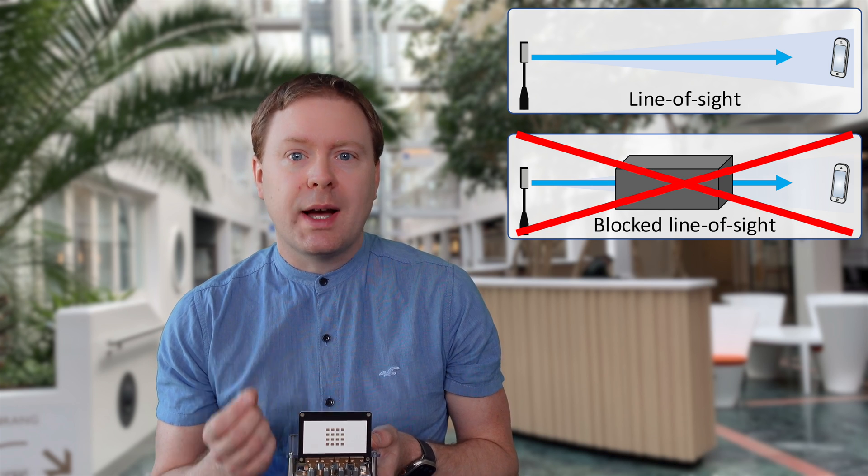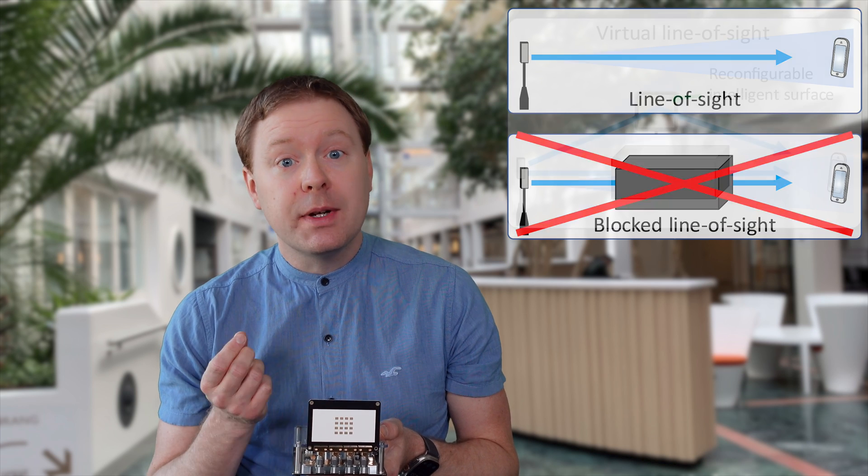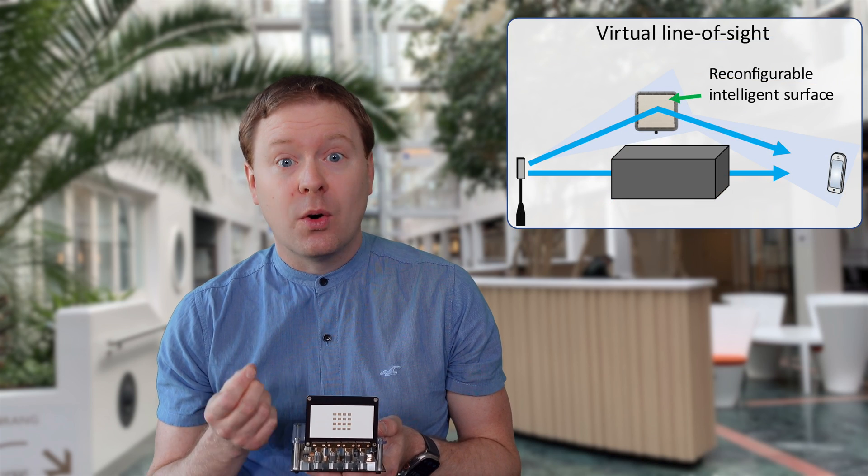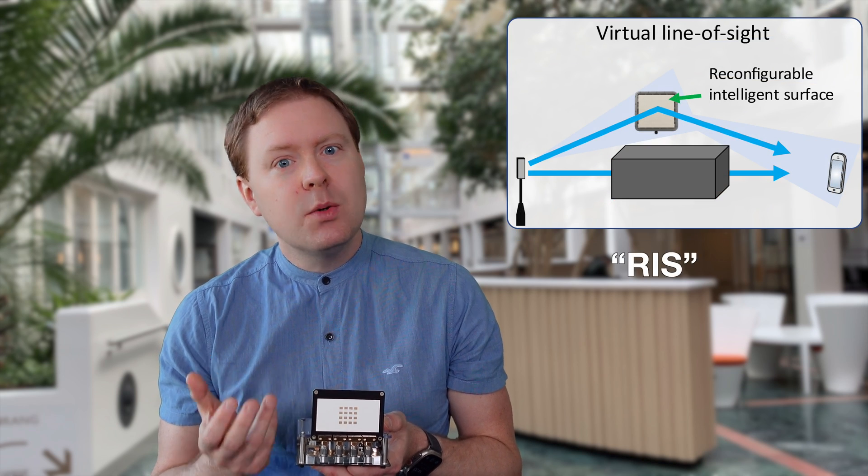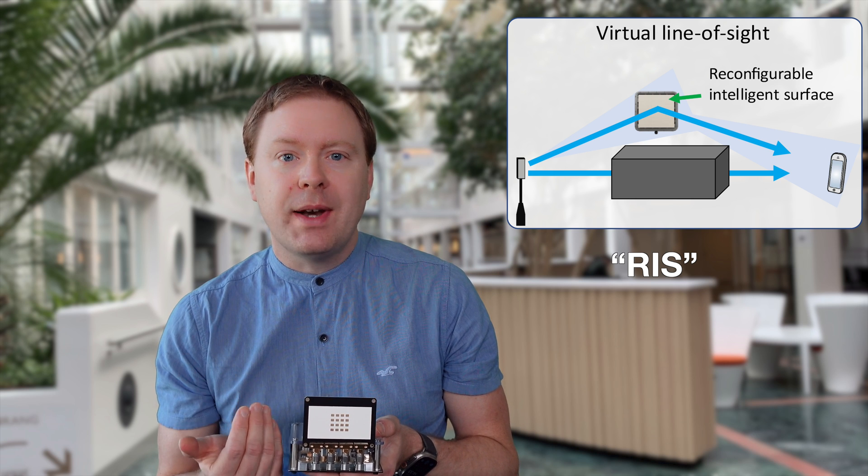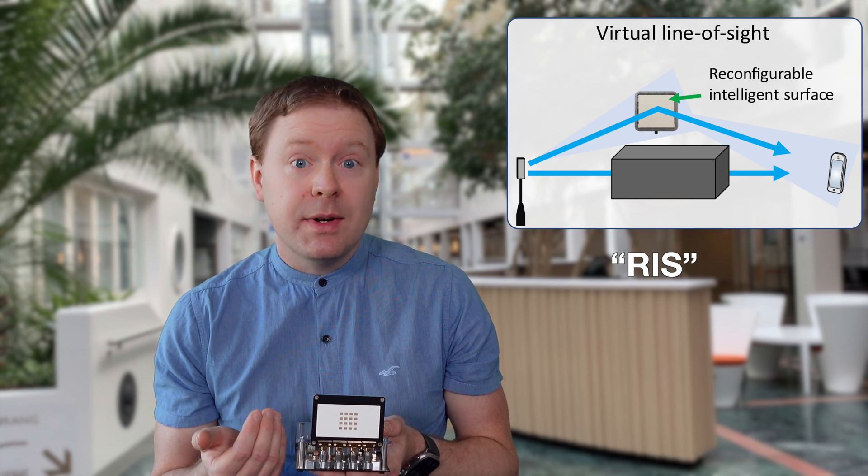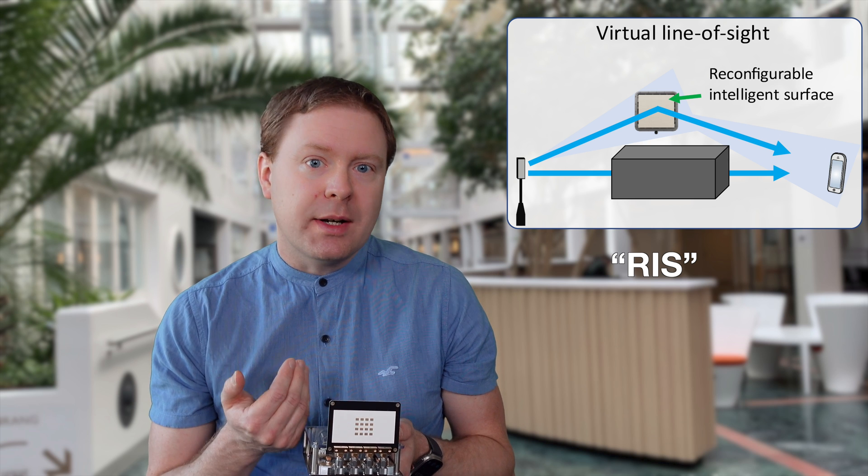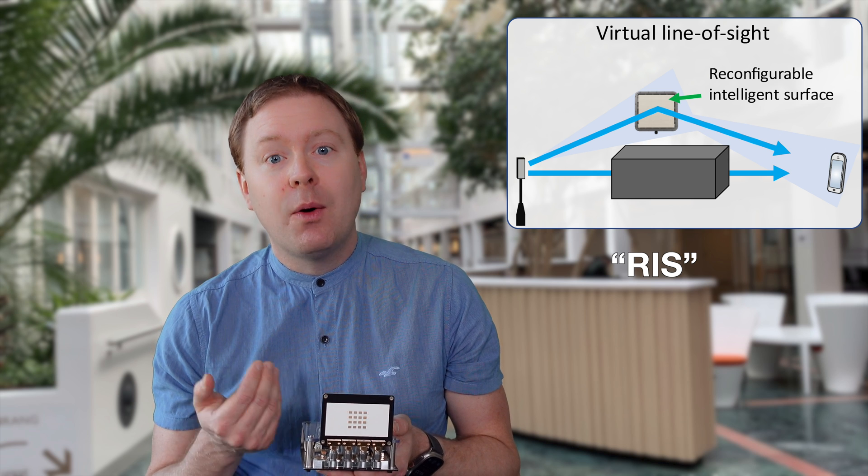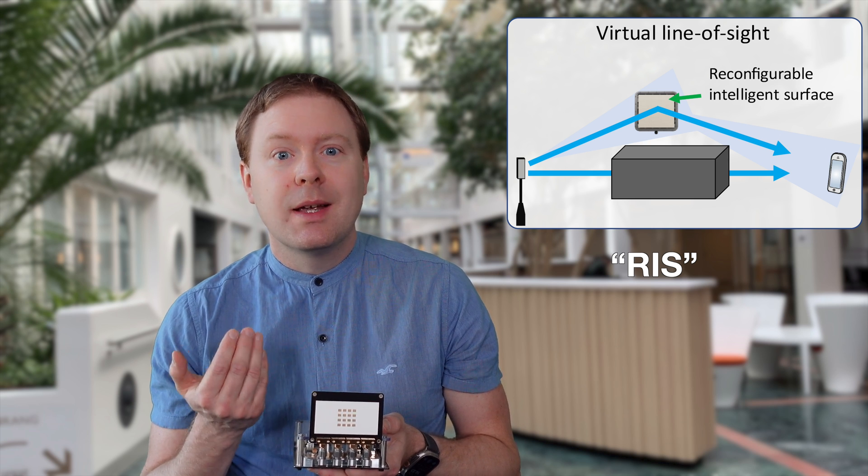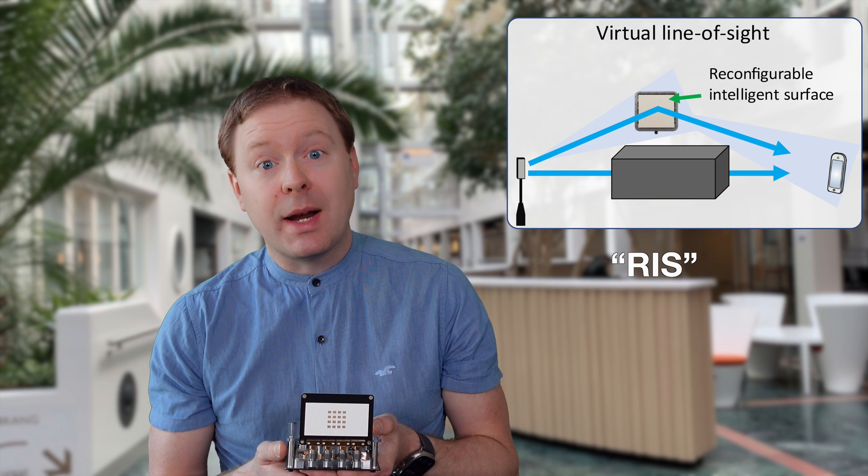However, there is a new kind of hardware known as reconfigurable intelligent surfaces, or RIS, that can be used as an intelligent mirror to reflect millimeter wave signals around corners. In this video, I will show you theoretically and experimentally how RIS can be used to extend the coverage of a millimeter wave system.